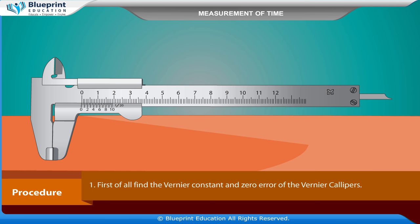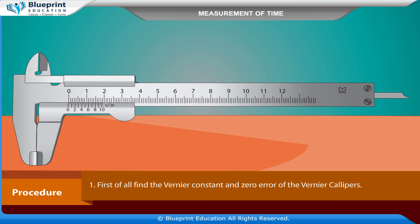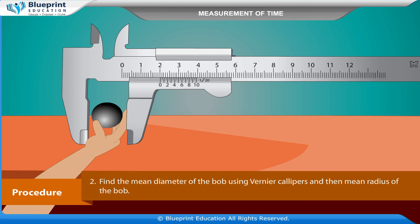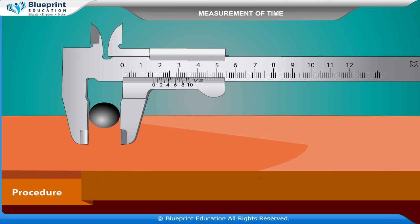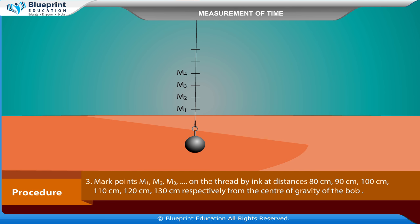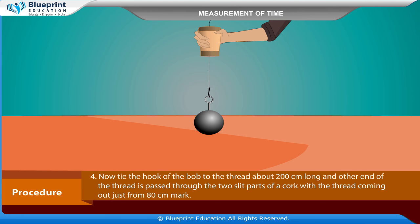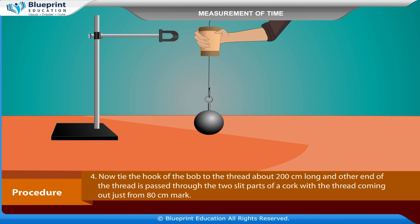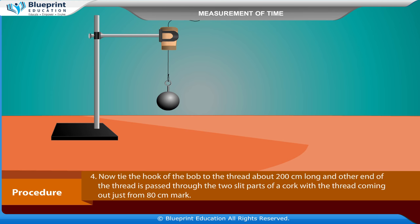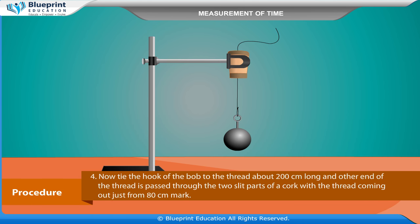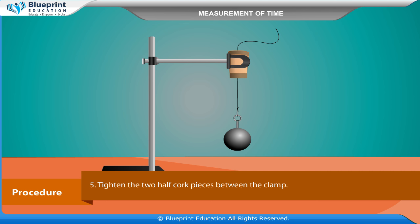Procedure: First of all, find the vernier constant and zero error of the vernier calipers. Find the mean diameter of the bob using vernier calipers and then the mean radius of the bob. Mark points M1, M2, M3 on the thread by ink at distances 80 cm, 90 cm, 100 cm, 110 cm, 120 cm, and 130 cm respectively from the center of gravity of the bob. Now tie the hook of the bob to the thread about 200 cm long, and the other end of the thread is passed through the two slit parts of a split cock with the thread coming out just from the 80 cm mark. Tighten the two half cock pieces between the clamp.